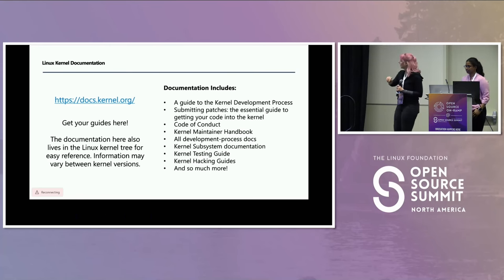Q&A: How do you look up maintainers for specific ports like ARM or RISC-V? There is actually a script inside the kernel tree. If you run it, it maps who maintains what subsystem — the first thing we usually look up to figure out who to send the patch to instead of spamming a wider audience. You just specify the directory and it'll tell you the people you'll want to reach out to.